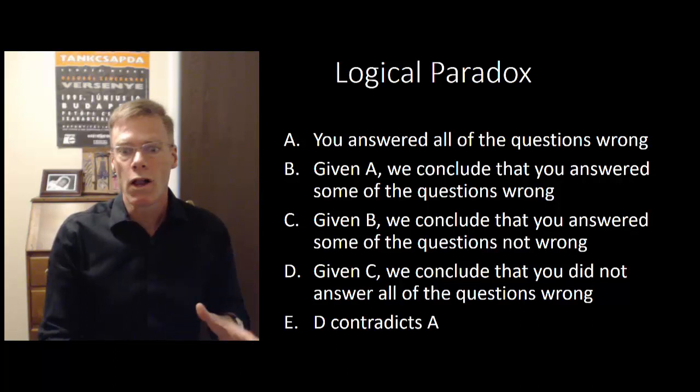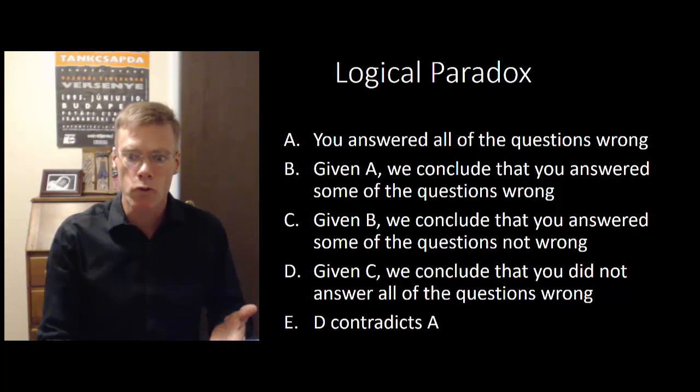Well, from B, we conclude that you answered some of the questions not wrong based on that earlier understanding. So, if somebody tells you that you answered some of the questions wrong, then you must have answered some of the questions not wrong. And from C, we can conclude that you did not answer all of the questions wrong.